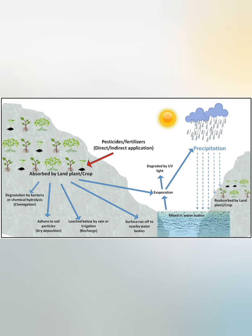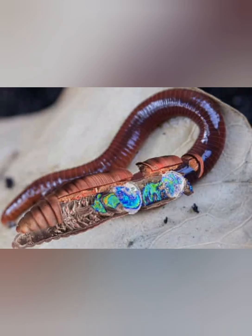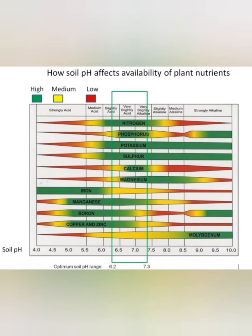Vermicompost also decomposes chemical residues. If you want to go organic, vermicompost is one of the things you need to consider. Maybe you've been using chemicals before and now you want to go into organic farming. According to Zim Organics, you need about three years to transition from inorganic to organic farming. With vermicompost, it actually speeds up that process because the worms themselves can digest chemicals so that the product that comes out is organic.